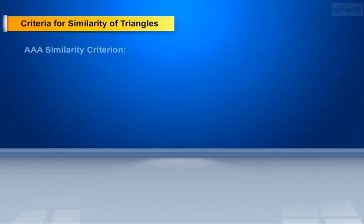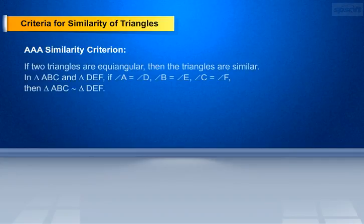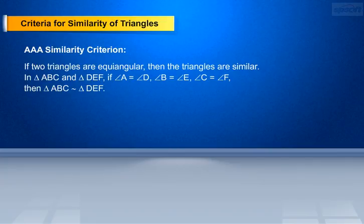Let us conclude what is the AA similarity criterion. AA similarity criterion: if two triangles are equiangular, then the triangles are said to be similar. In triangle ABC and triangle DEF, if angle A equals angle D, angle B equals angle E, and angle C equals angle F, then triangle ABC is similar to triangle DEF.